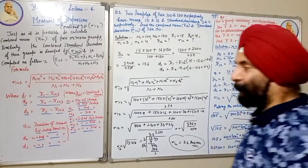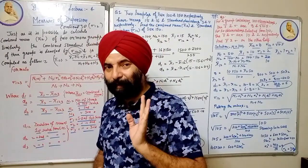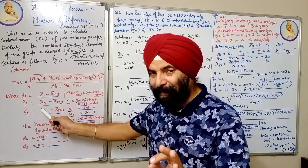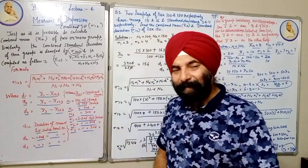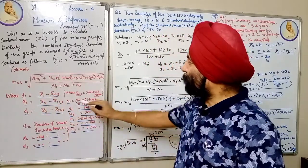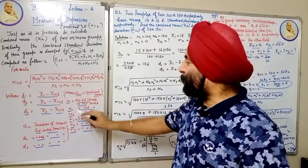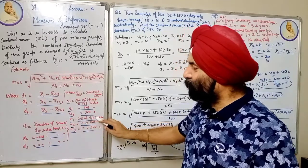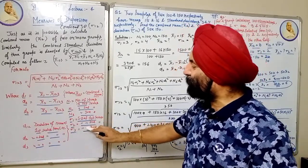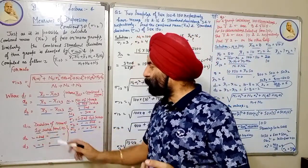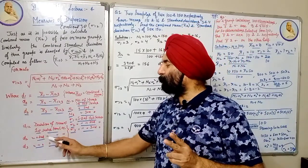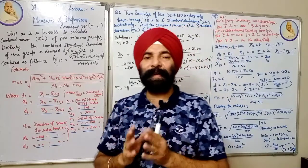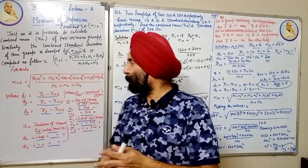So D1 = mean of the first series (given) minus combined mean. D2 = mean of the second series minus combined mean. D3 = mean of the third series minus combined mean. N1 = number of items in first series, N2 = number of items in second series, N3 = number of items in third series. σ1 = standard deviation of first series, σ2 = standard deviation of second series, σ3 = standard deviation of third series. D1 is the deviation of the mean of the first series from combined mean, D2 from the second, D3 from the third.